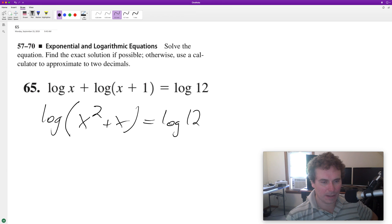Because they have the same setup on both sides of the equation, we can drop the log. So we end up with x² + x equals 12. We subtract 12 from both sides.